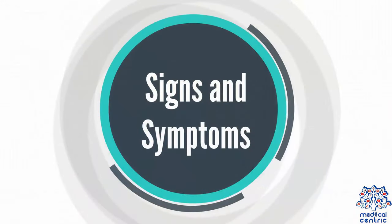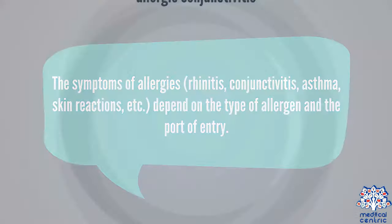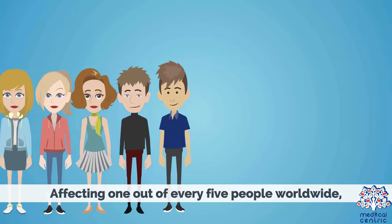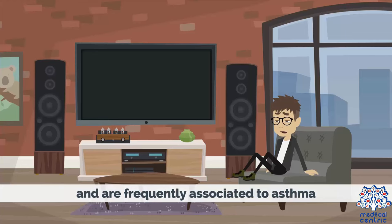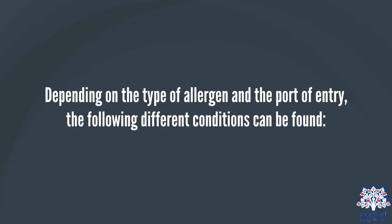Signs and symptoms. The symptoms of allergies such as rhinitis, conjunctivitis, asthma, skin reactions, etc., depend on the type of allergen and the port of entry. The most common allergic diseases are rhinitis or allergic conjunctivitis, affecting one out of every five people worldwide, and are frequently associated with asthma. Depending on the type of allergen and the port of entry, the following different conditions can be found.